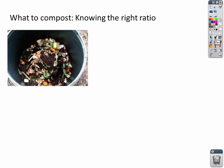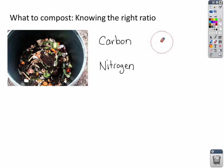When composting, it's really important to know the right ratio of materials to add to your compost pile. Basically, what we're looking at are two elements that you must put in in just the right combination, and those two elements are carbon and nitrogen. What you want is generally speaking somewhere between 25 and 30 parts of carbon for every one part of nitrogen.